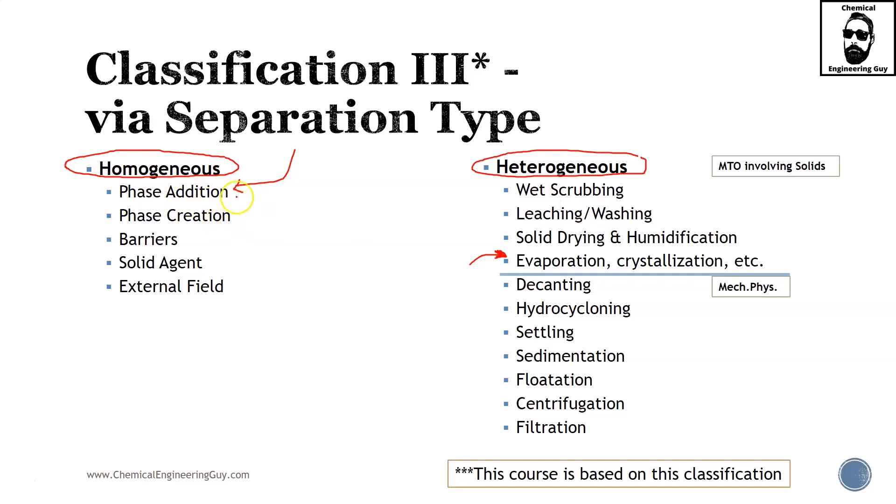Phase addition, phase creation—we'll be talking about desolvation, gas absorption, liquid extraction. Barriers will be membranes and a lot of processes. Solid agent can be shown as an example: absorption, chromatography, or external field, which can be electrical, magnetism, gravitational, and so on.